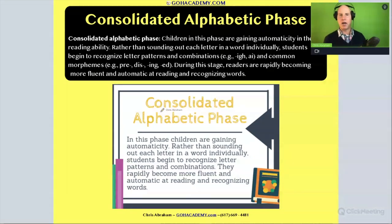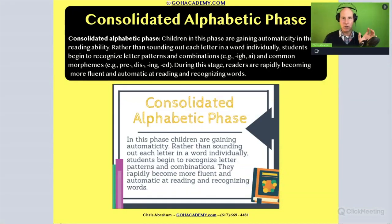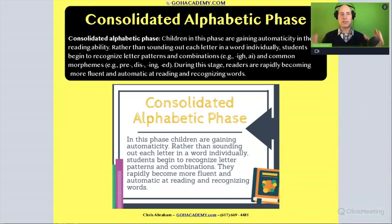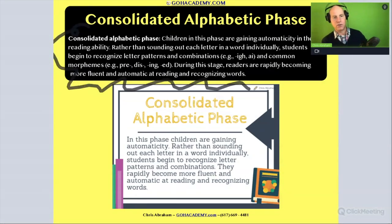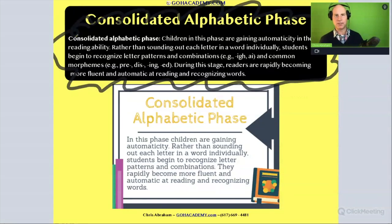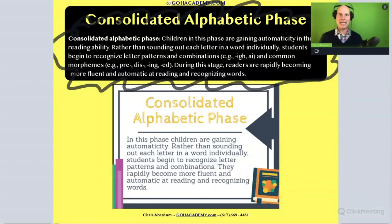They're picking up on blends and digraphs; they're able to decode the beginning, middle, and end of words. With a multi-syllable word, they can chunk it up into its prefixes and suffixes. There's a great definition of the consolidated alphabetical principle, but basically at this point it's just before automaticity.